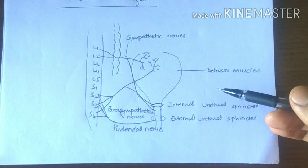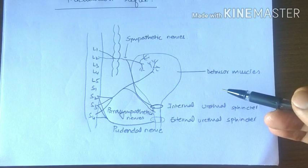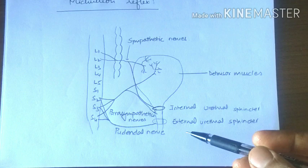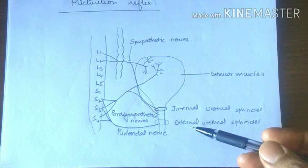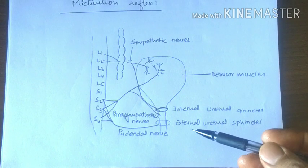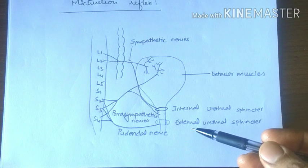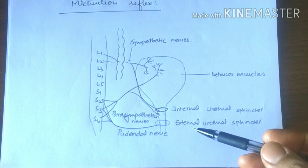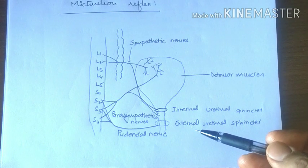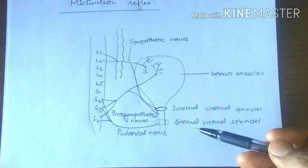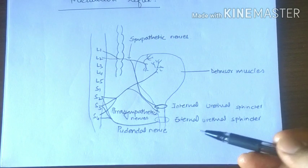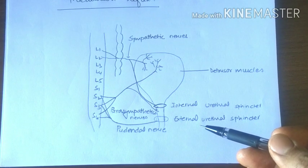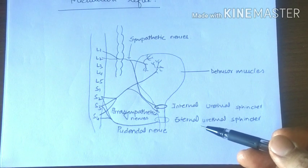When the micturition reflex becomes powerful enough, it sets another reflex that passes through the pudendal nerve to the external urethral sphincter and inhibits the pudendal nerve. Inhibition of the pudendal nerve is more potent in the brain than voluntary constrictor signals to the external urethral sphincter, and that results in urination. If it is not possible, urination will not occur until the bladder fills further.